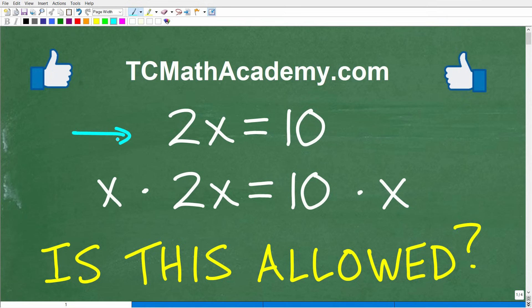So my question to you is this, if we have this equation and I wanna multiply both sides of the equation by the variable x, can we do this in algebra? In other words, is this allowed? And if this is allowed, what's the implications of doing this? Or maybe this is not allowed at all.